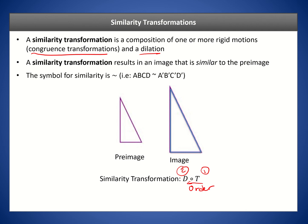The symbol for similarity is the tilde (~). For example, if we have quadrilaterals ABCD and A'B'C'D', we say they are similar using the tilde symbol between them. Because there exists a similarity transformation from triangle ABC to triangle A'B'C', we can write that triangle ABC is similar to triangle A'B'C'.